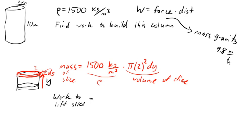And so the work here, the force is gonna be gravity times the mass, so 9.8 times 1,500 times pi times 2 squared dy. So that's all force. And we're gonna multiply that by the distance that this slice is being lifted. Now in this case, because y meters of the column have already been built, the distance we have to lift this slice is just y.